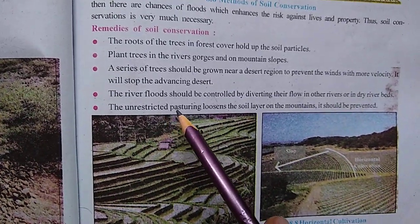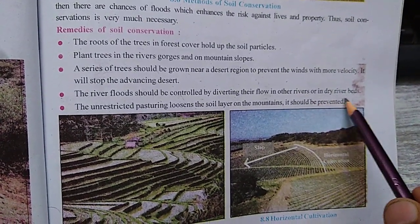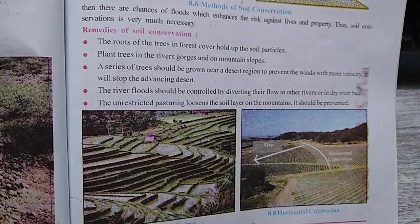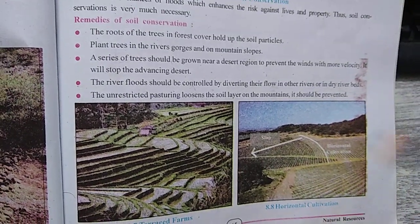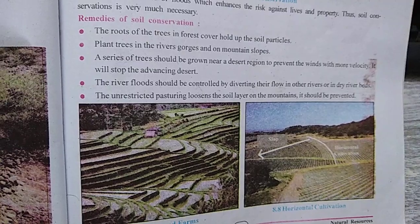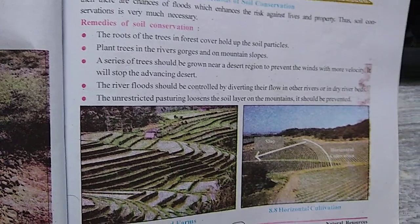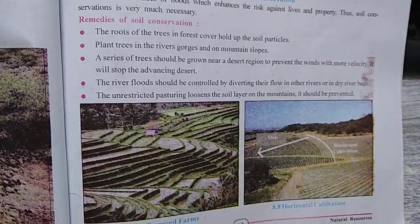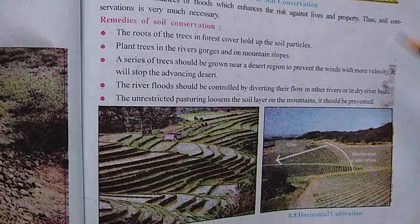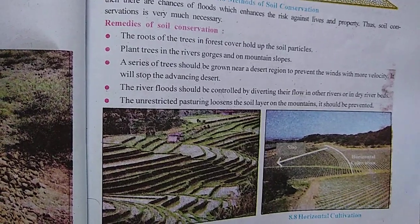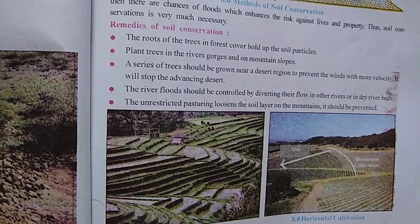Next, river flood should be controlled by diverting the flow into another river or into a dry area. In India, many rivers like the Ganga have many tributaries, so the flow can be transferred to other rivers. In that way you can control river water. You can either transfer the flow to another river or divert it to an area that is dry.